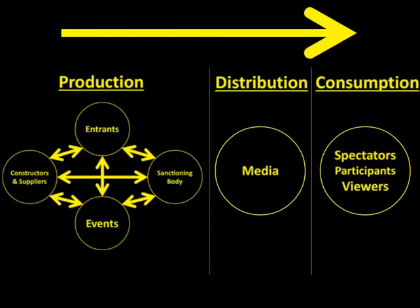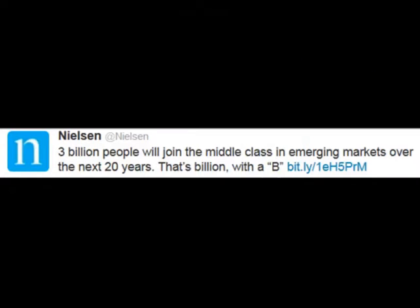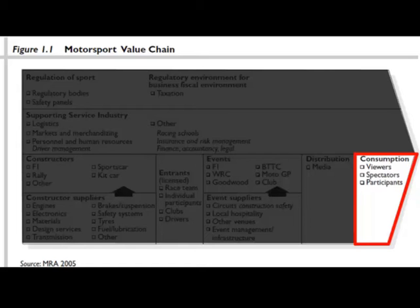Just like distribution is dynamic and changing, consumption habits are also changing. One simple way to showcase this: a 2014 statistic indicated that 3 billion people in the next 20 years across the world will join the middle class. More and more people will be capable of watching a race on television because they'll have access to TV, and they'll be capable of purchasing a motorized vehicle. So you're going to get more and more potential consumers for a variety of racing series — whether at the regional, national, or global levels — playing a key role in growing the sport. The consumption is the last component in the motorsport value chain.